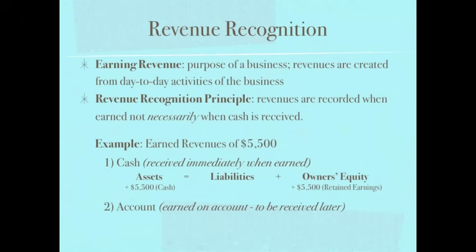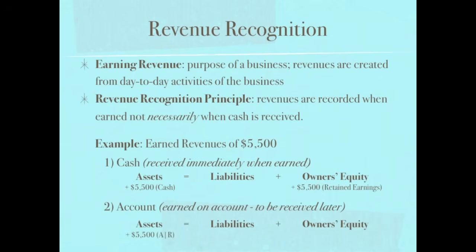Now let's look at the other scenario: we earn the revenues on account, meaning we'll get paid later. Are assets being affected? Cash isn't being affected here, but there is an asset called accounts receivable — money that we're owed. So assets are going up by $5,500. Are liabilities changing? We don't owe anyone money; we earned revenue. Owner's equity is increasing because revenues affect net income, net income affects retained earnings, and retained earnings is an owner's equity account.